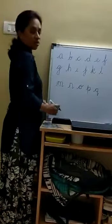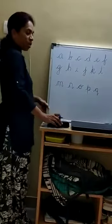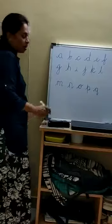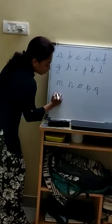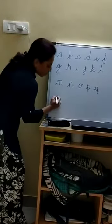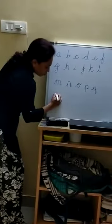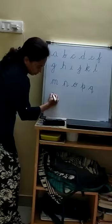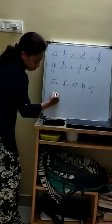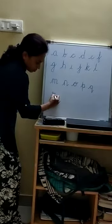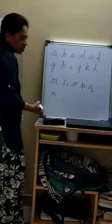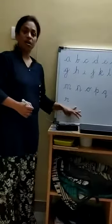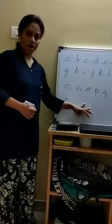Next letter is R. Name of the letter is R. Sound of the letter is R. Start in between the second and third line. Starting from the third line, go to the second line, take a circle, slipping line, and come back to the third line with a tail. R. Rain. R. Rose. R. Rat.